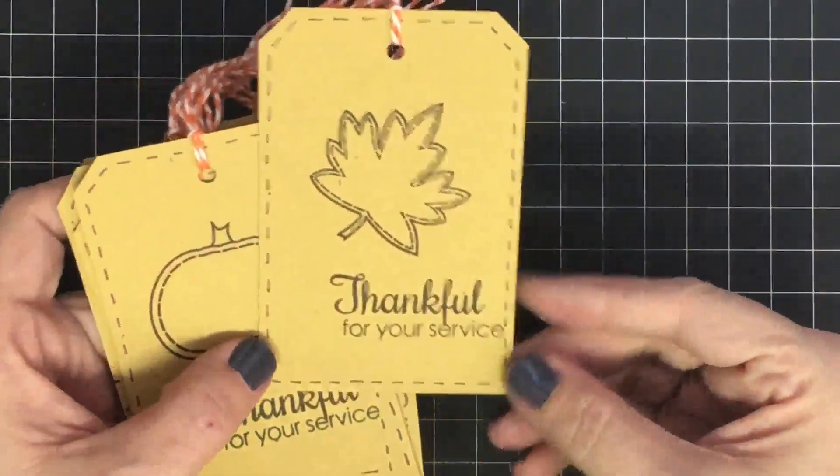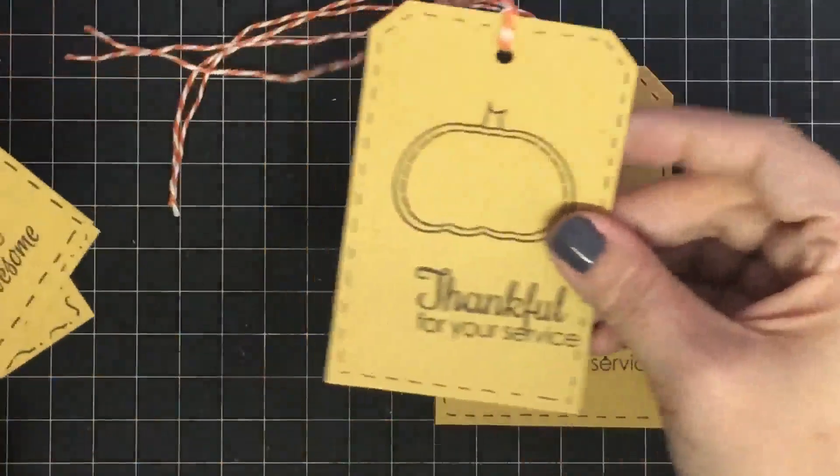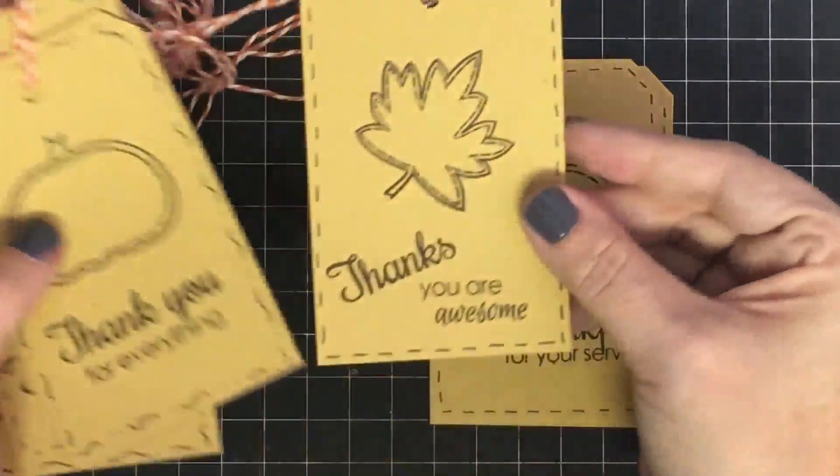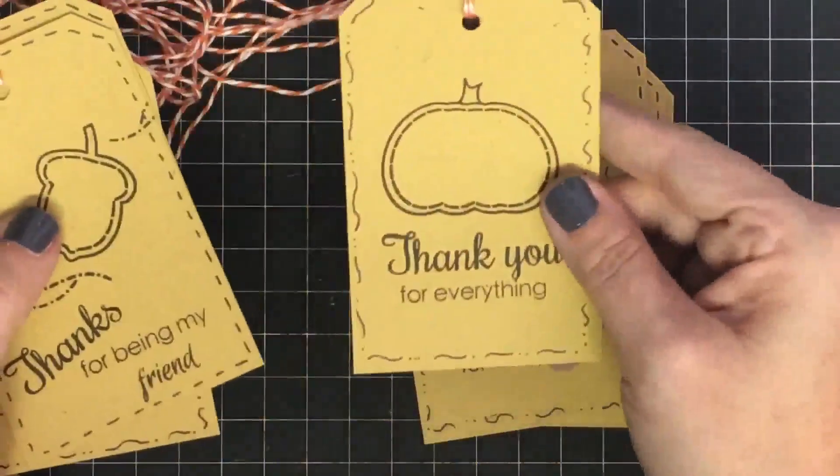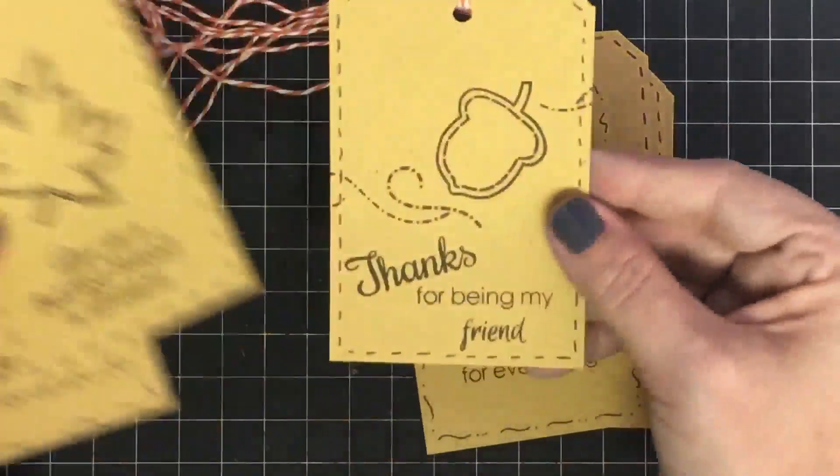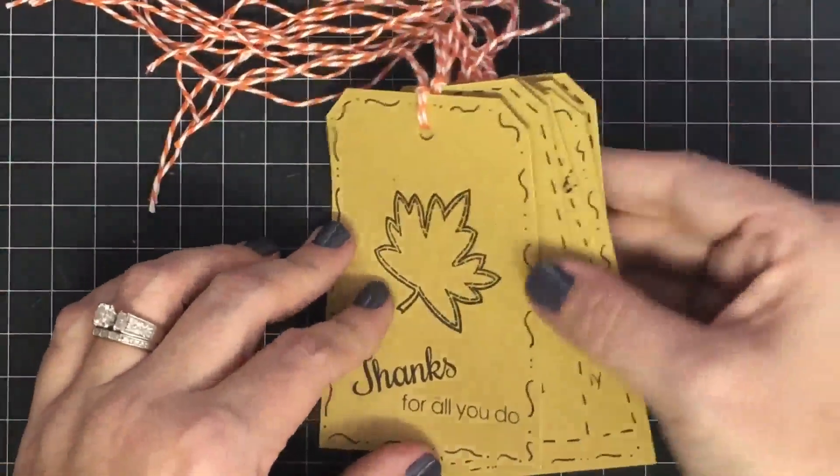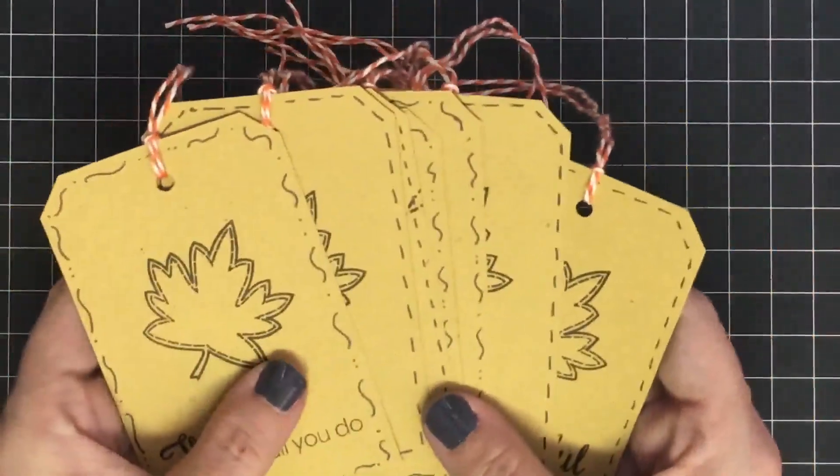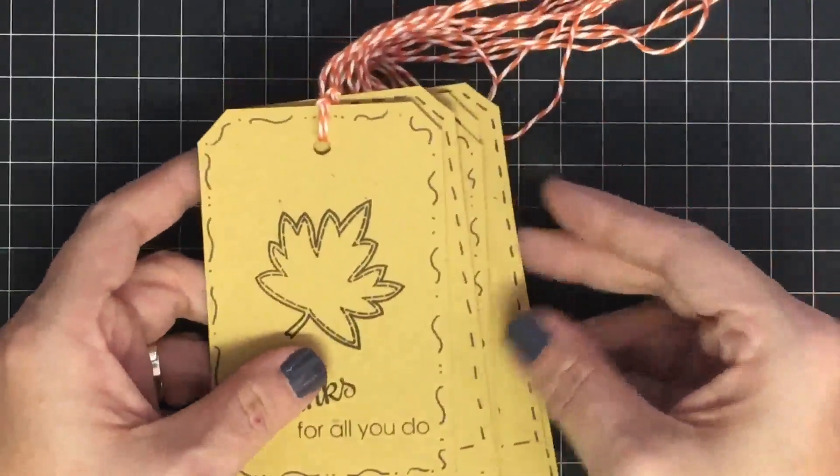Now you can see, using those two stamp sets, I have this one that says thankful for your service, this one says thankful for your service, thanks you are awesome, thank you for everything, thank you for everything, thanks for being my friend, you are a beloved friend in all seasons, and thanks for all you do. Now I have eight tags that I can add to token gifts. What do I mean by token gifts? Let me show you.